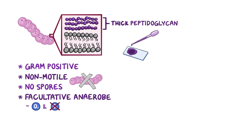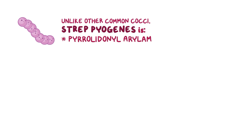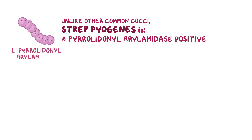Strep pyogenes is catalase negative, meaning it does not make an enzyme called catalase. However, unlike other common cocci like enterococci, strep pyogenes is pyrolidonyl arylamidase positive, because it makes an enzyme called L-pyrolidonyl arylamidase.